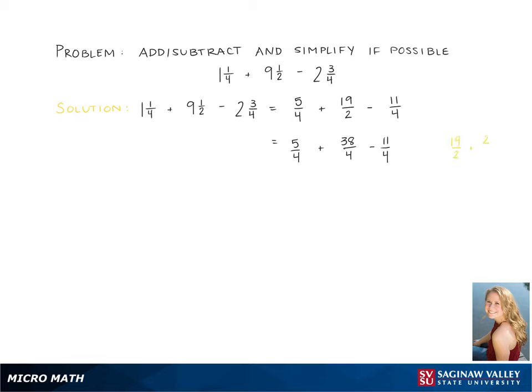We do this by multiplying the top and bottom by the same number. 2 times 2 gives us 4, and 2 times 19 is 38.